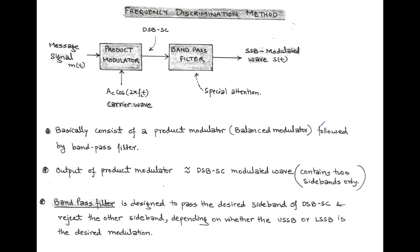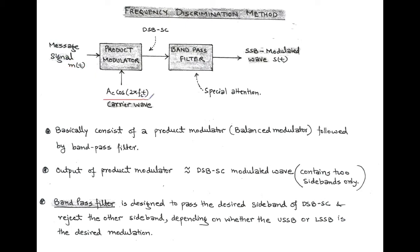We first discuss the frequency discrimination method, also called the filter method. This method consists of a product modulator — a type of balanced modulator — followed by a bandpass filter. Special attention is given to this bandpass filter, which is specially designed for SSB generation. The input of the product modulator is the message signal and carrier wave, and the output is double sideband suppressed carrier. After passing through the bandpass filter, we get a single sideband modulated wave S(t). So, the designing of the bandpass filter is most important.